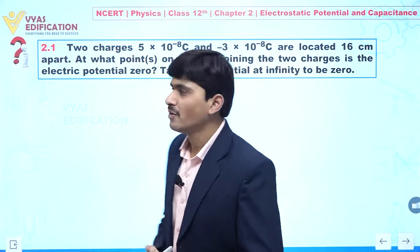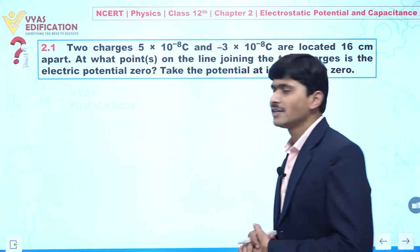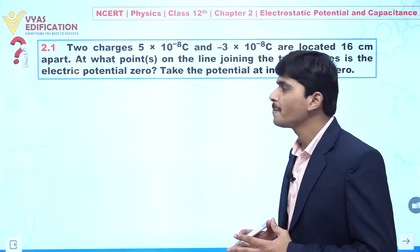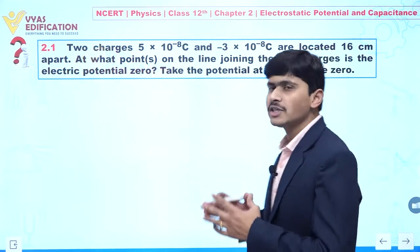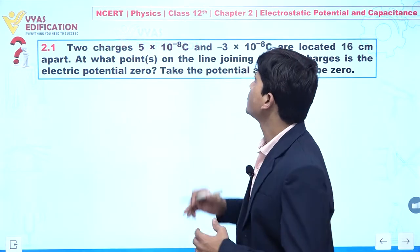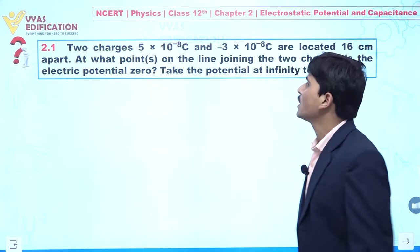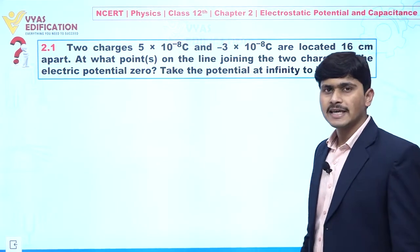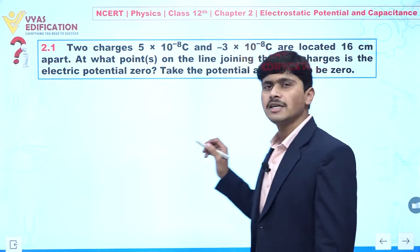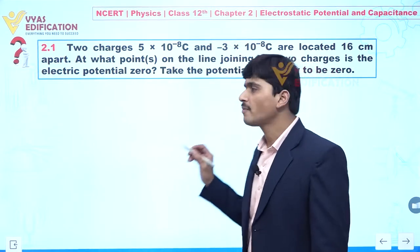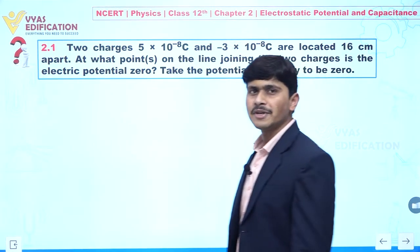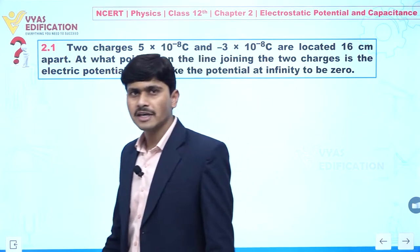Now, dear students, we are going to discuss question number 2.1. In this question, it is given to you two charges: 5 × 10⁻⁸ coulomb and −3 × 10⁻⁸ coulomb are located 16 centimeters apart.